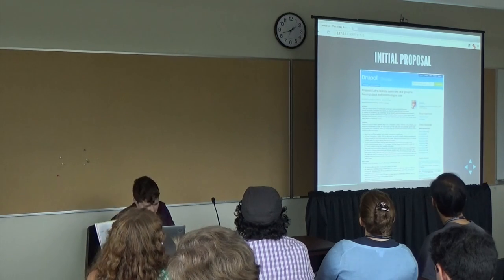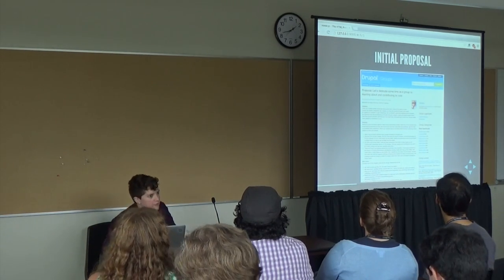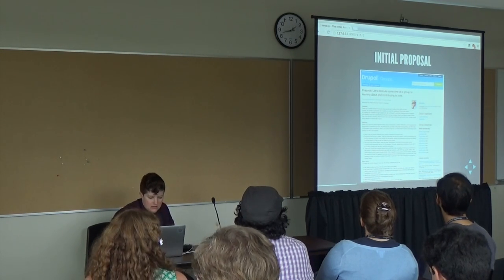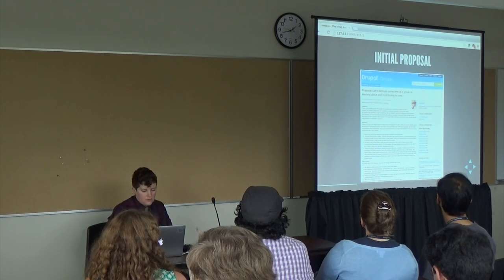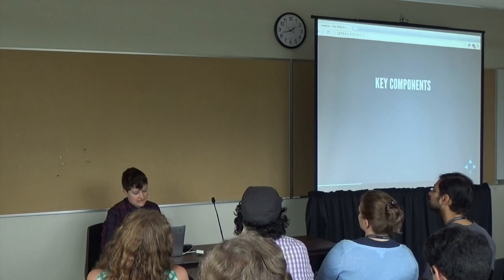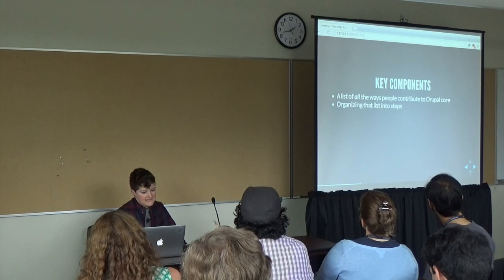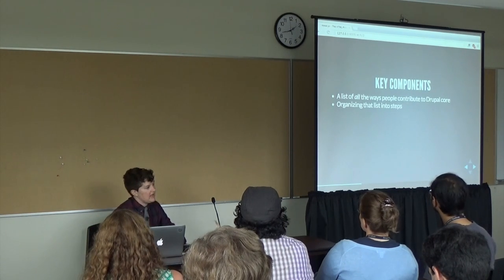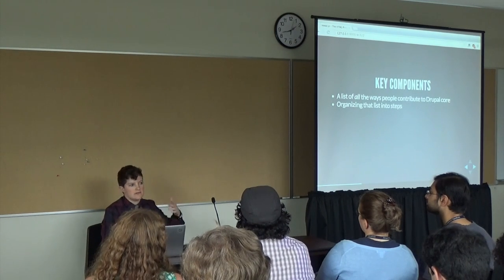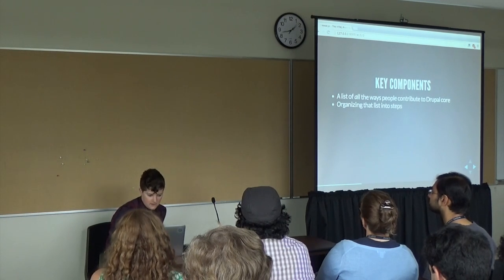The initial proposal was posted to the Drupal community infrastructure. As you can see, he laid out, based on conversation at Drupal London, a few key components: one is a list of all of the ways that people contribute to Drupal core, another is organizing that list into steps. I'll have these slides up online afterwards, so if people want to click on the images they'll be linked to the original thing — I figured that's probably easier than putting URLs on everything.